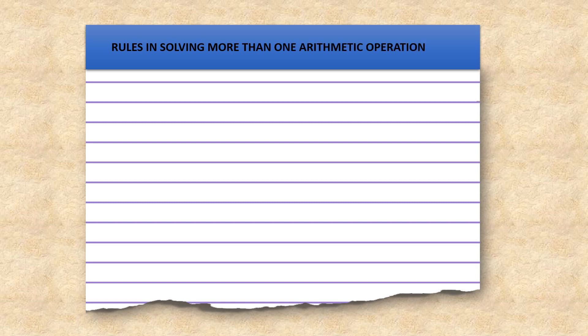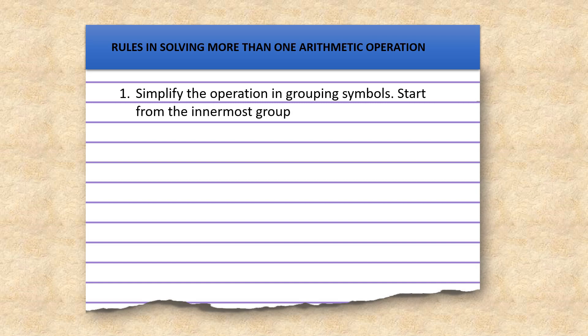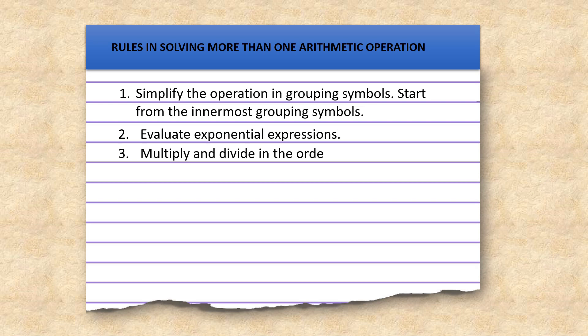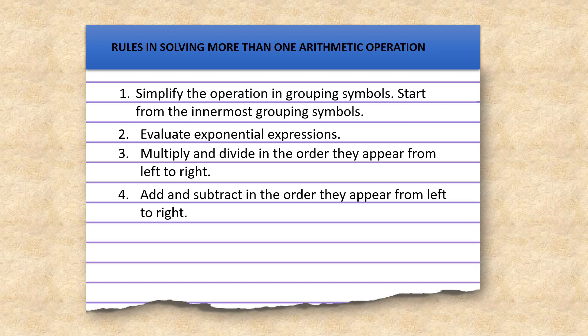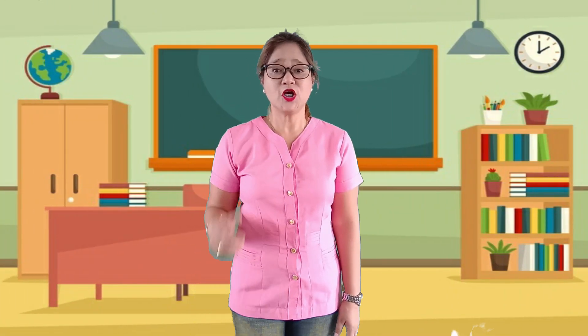Before we proceed to our new topic, let us recall our previous lesson. What are the rules in solving more than one arithmetic operation? First, simplify the operations in grouping symbols — start from the innermost grouping symbol. Second, evaluate exponential expressions. Third, multiply and divide in the order they appear from left to right. Fourth, add and subtract in the order they appear from left to right. I'm glad you still remember our previous lesson. Good job!